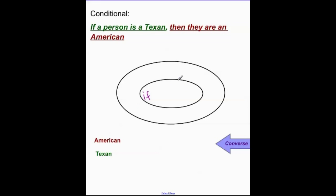This inner part is the if part. It is our hypothesis. This outer part is the then. So we have our if part up here, our P, then Q. And so this is also our P, and this is our Q.